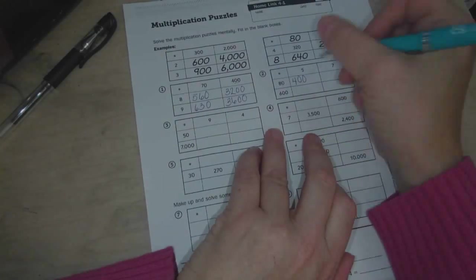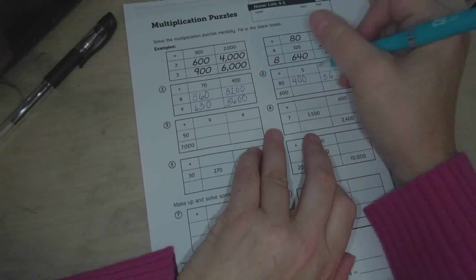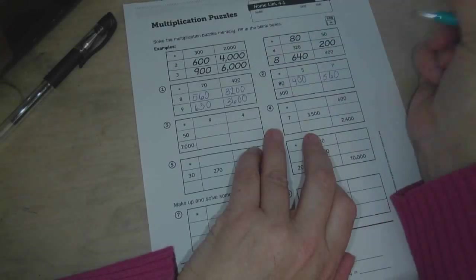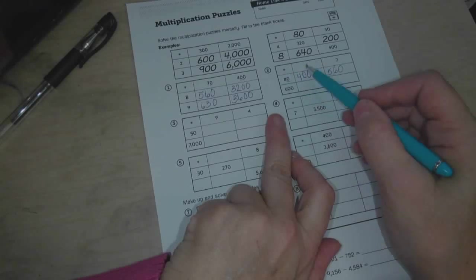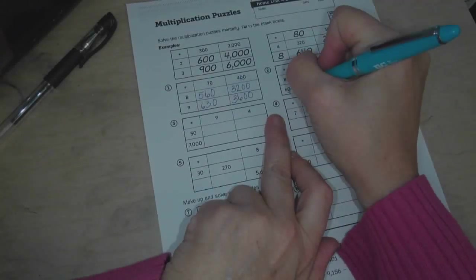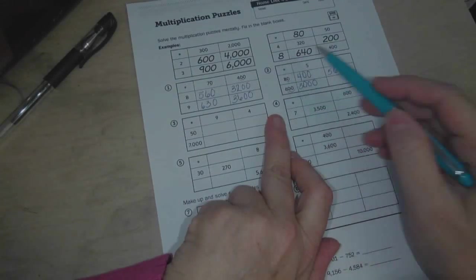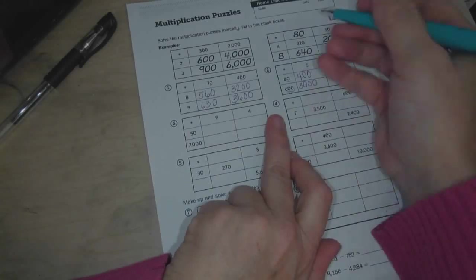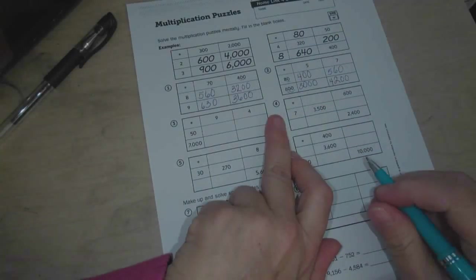80 times 7. So 8 times 7 is 56, and the zero, making it 560. 600 times 5. 5 times 6 is 30, and then there's two zeros. 600 times 7. So 6 times 7 is 42, and then the two zeros make it 4,200.